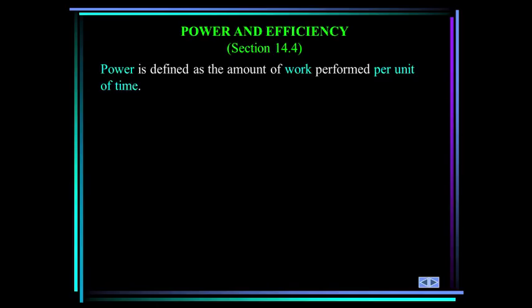So first some definitions. Power is defined as the amount of work performed per unit time. We can write that as P equals the amount of work per unit time. But as we found out in the last section, the work can be written as the force dotted with the displacement.